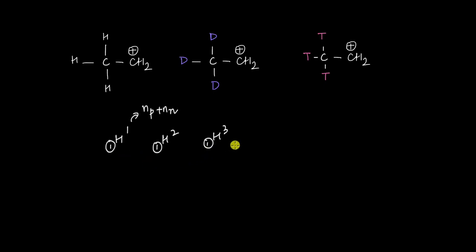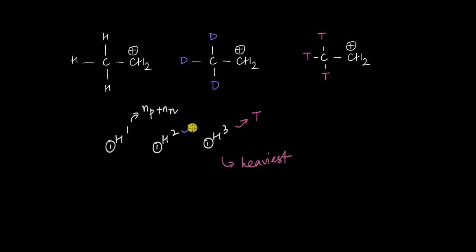H3, which we commonly call tritium, has a mass number of 3 and is represented by the symbol T. Because tritium has the highest mass number, it is the heaviest, followed by H2, which we call deuterium and represent by the symbol D, followed by hydrogen, which is the lightest of all its isotopes.